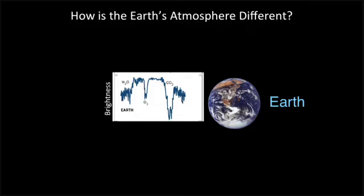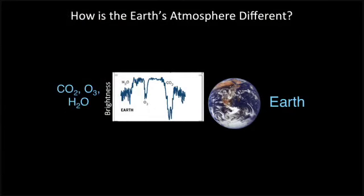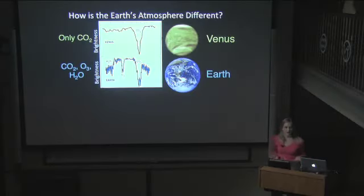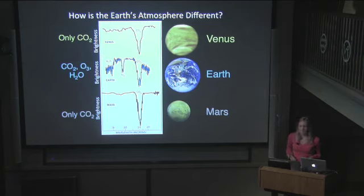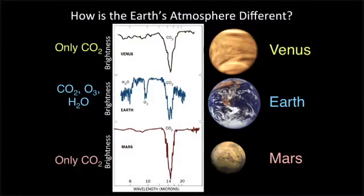Another thing you can do to test your ability to differentiate between worlds with life and worlds without is to compare what you see in the atmosphere of the Earth to the atmospheres of other planets in our solar system. For the Earth, if you look at a plot of brightness versus color of light, you can see little dips corresponding to ozone, water, and carbon dioxide. However, if you made this plot for Venus, you would just see a dip for carbon dioxide — no ozone, no water. The same thing is true for Mars. So perhaps seeing the combination of water, ozone, and carbon dioxide tells you that there might be life on a particular planet. This requires lots of modeling to make sure you're seeing a real signal that could only be explained by life, but it's an active area of research.